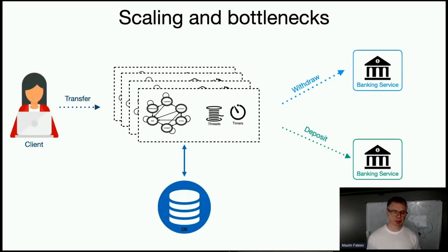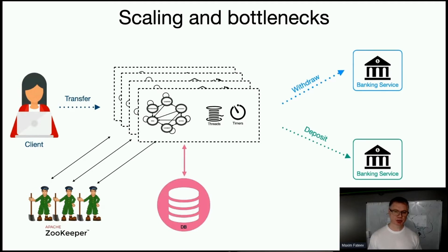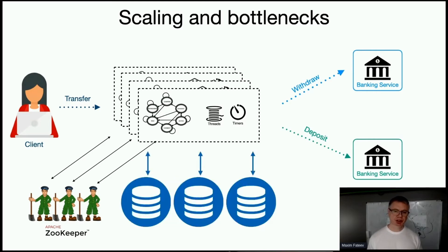At some point you can't fit all these requests in a single process, so you need to shard them across multiple processes. If you're running stateful applications and caching a lot of state, you start introducing sharding, which usually requires another subsystem like ZooKeeper to move and allocate shards to hosts. Then the database becomes a bottleneck as traffic grows — sharded databases add even more complexity — and you introduce queues like RabbitMQ, Kafka, or SQS to handle downstream service calls.